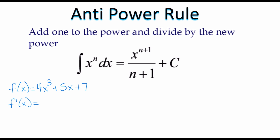basically what we did was take the power, multiply it to the leading coefficient — so 12 — and then reduce the power by 1. So 12x squared, plus when you see an x by itself the power is 1: take the 1, multiply it to the 5, reduce the power by 1. x to the 0 power is just 1, so the x to the 0 just isn't there. The derivative of a constant by itself is just 0, so we don't need to write plus 0. So the derivative of 4x cubed plus 5x plus 7 is equal to 12x squared plus 5.